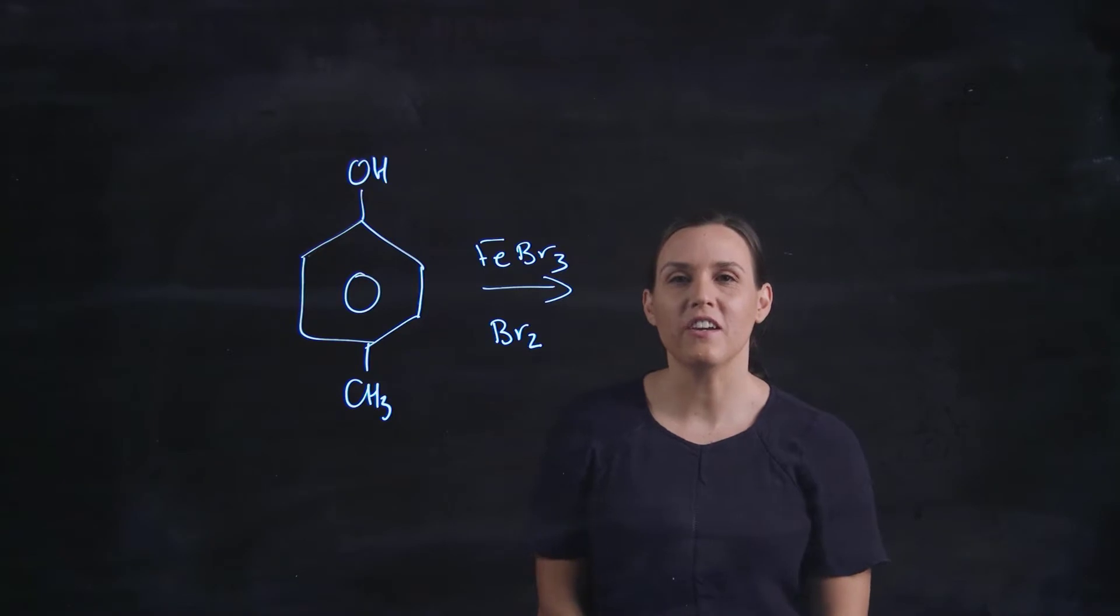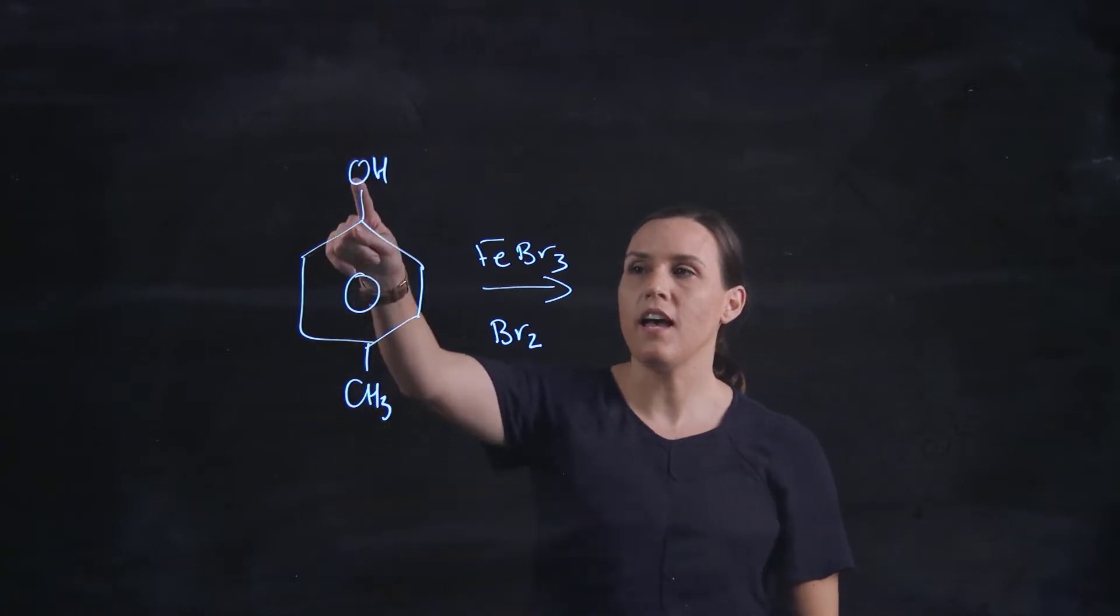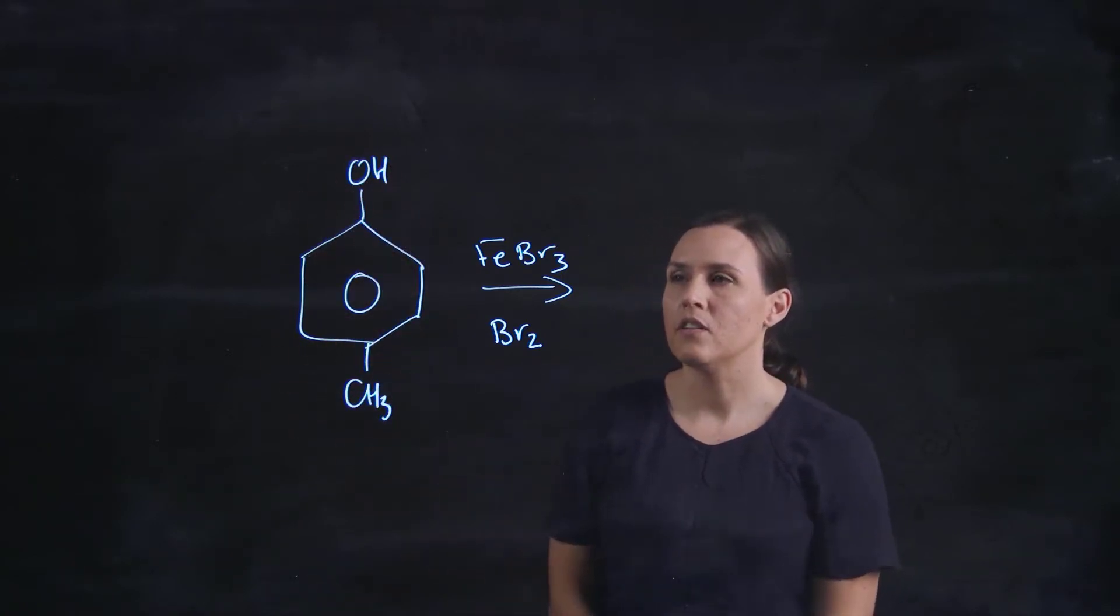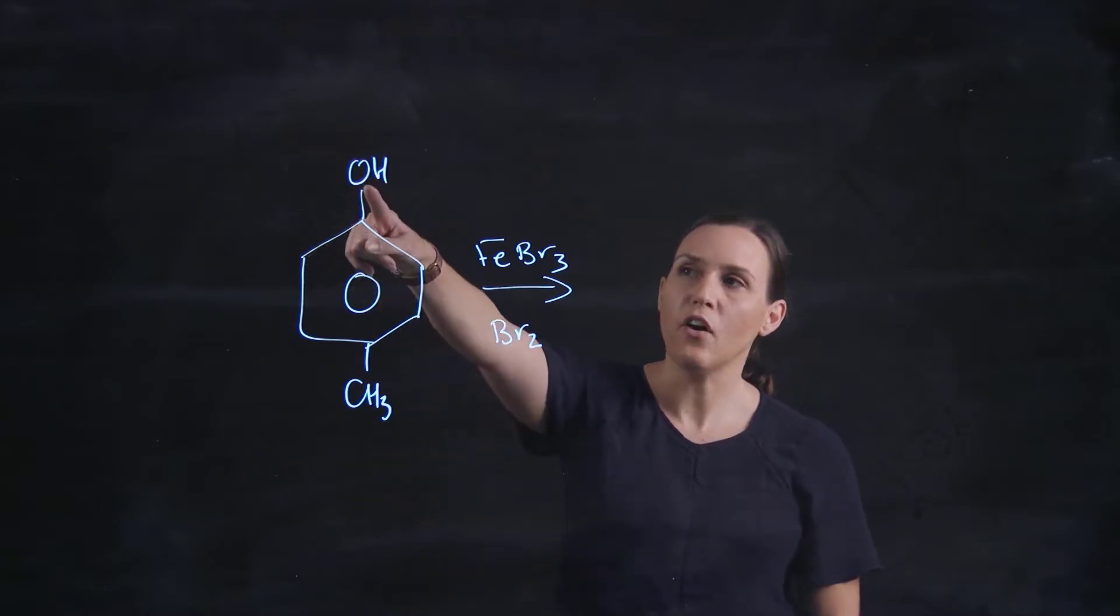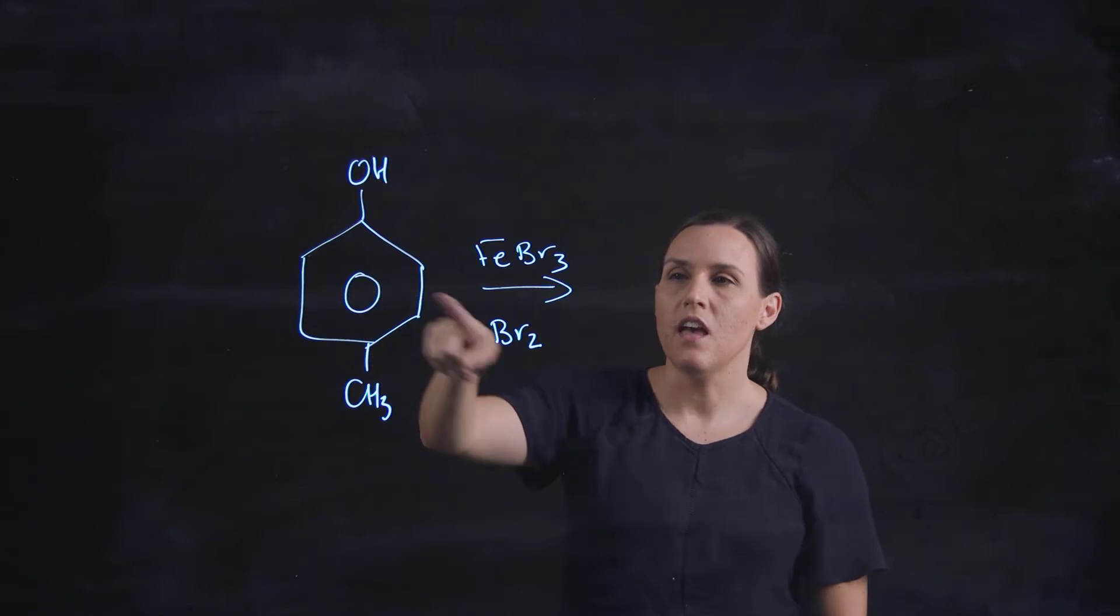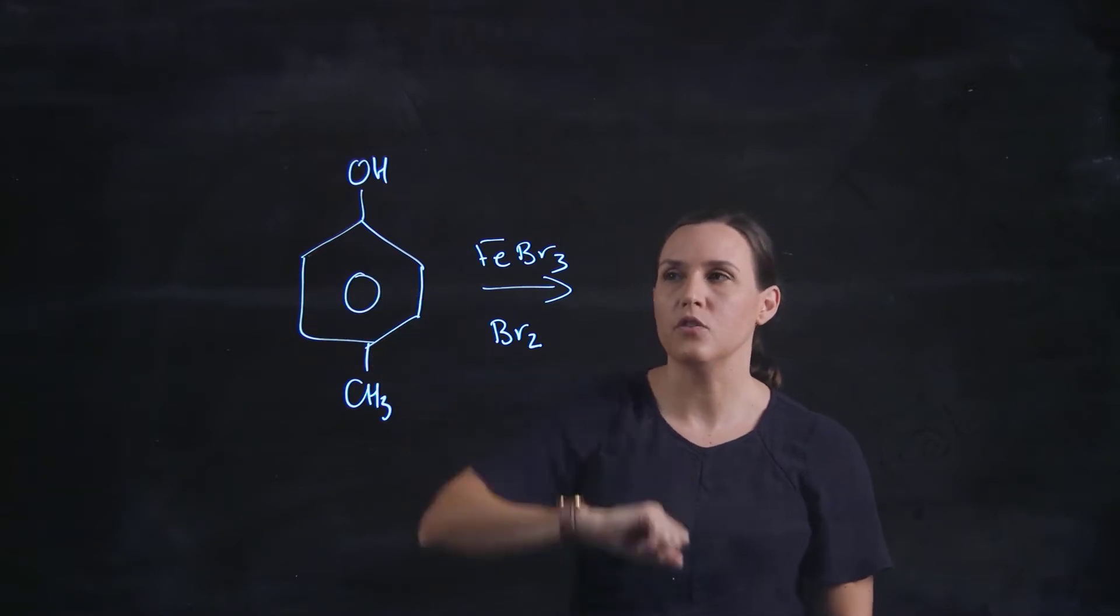Hi, so welcome to another video. This video is looking at the major product for a bromination reaction with a difunctional benzene group. So we have an alcohol and a methyl group that's attached to the benzene and we're going to be adding bromine to it.